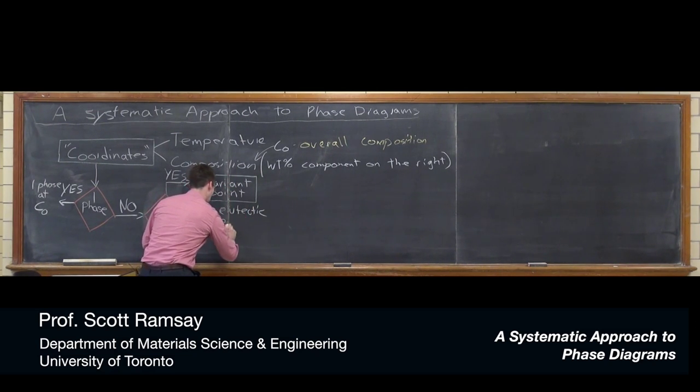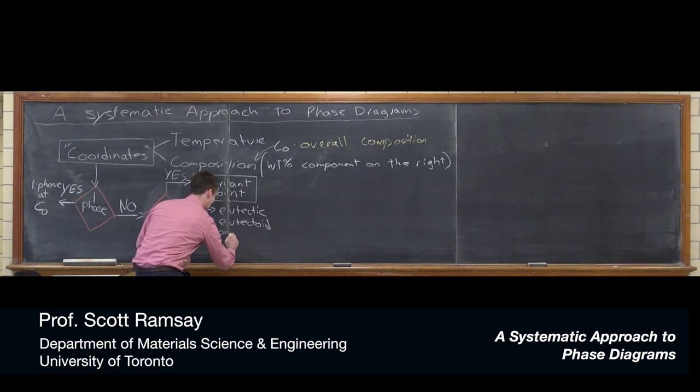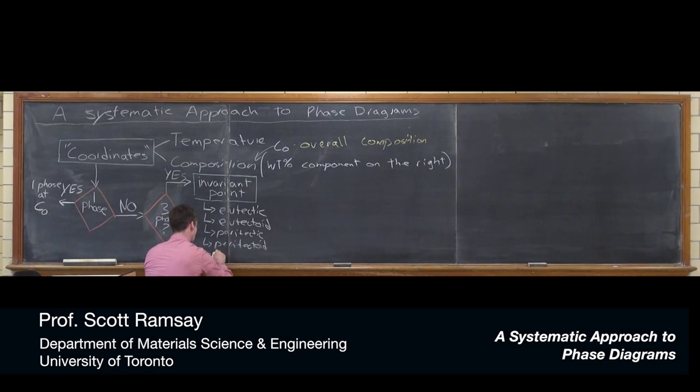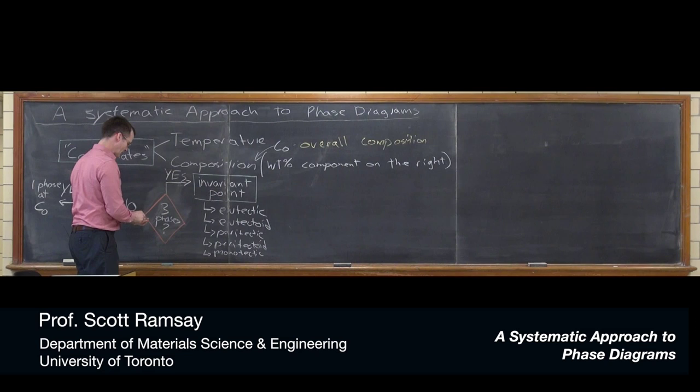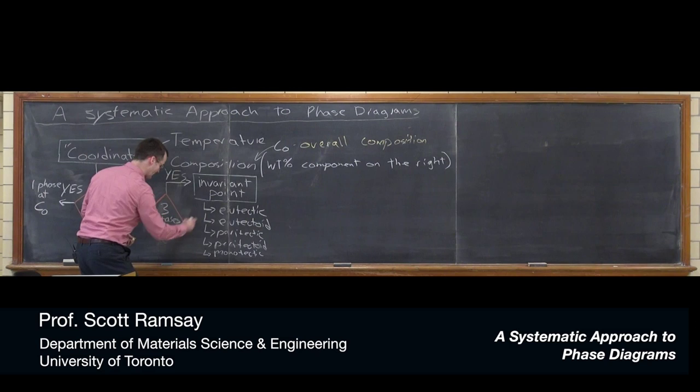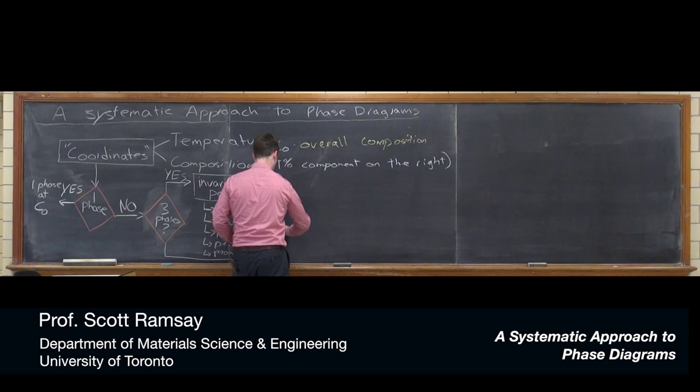We can have a eutectic. We can have something that looks like a eutectic but has no liquid, eutectoid. We can have a peritectic, we can have a peritectoid, and of course we can have a monotectic with two immiscible liquids. So that's one place we can end up. But really, and those are very interesting, but a lot of times what we find is we come to this scenario here.